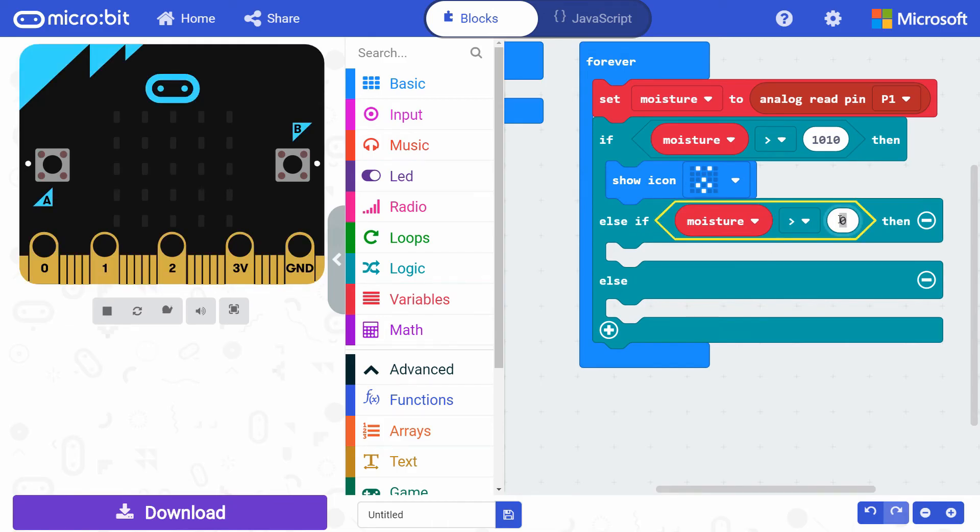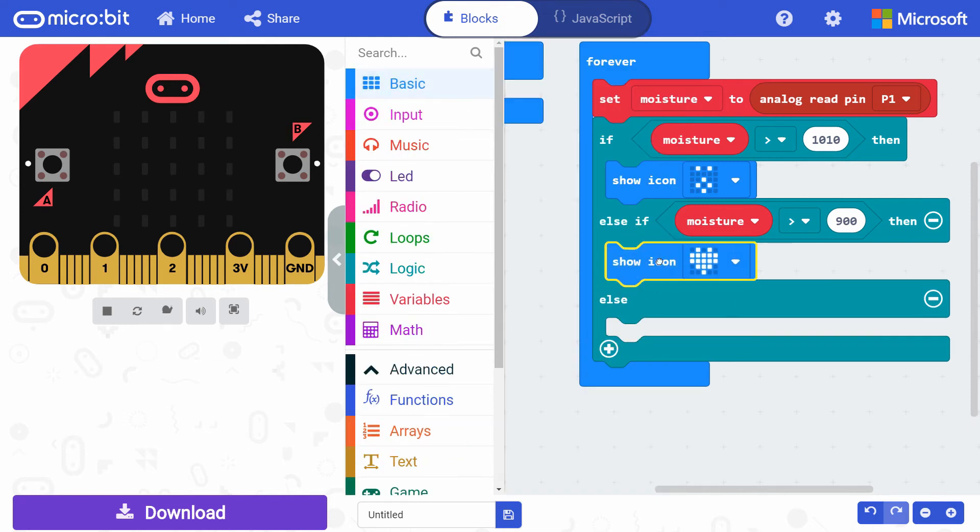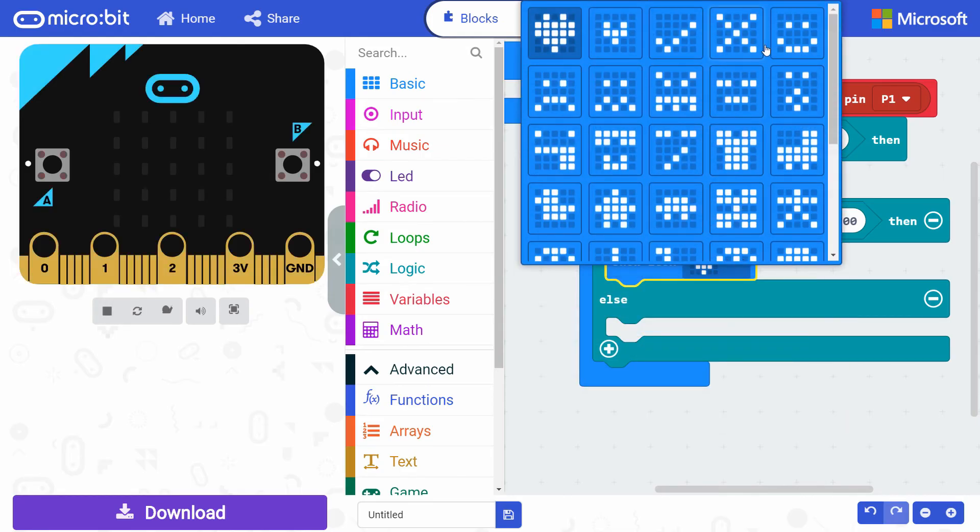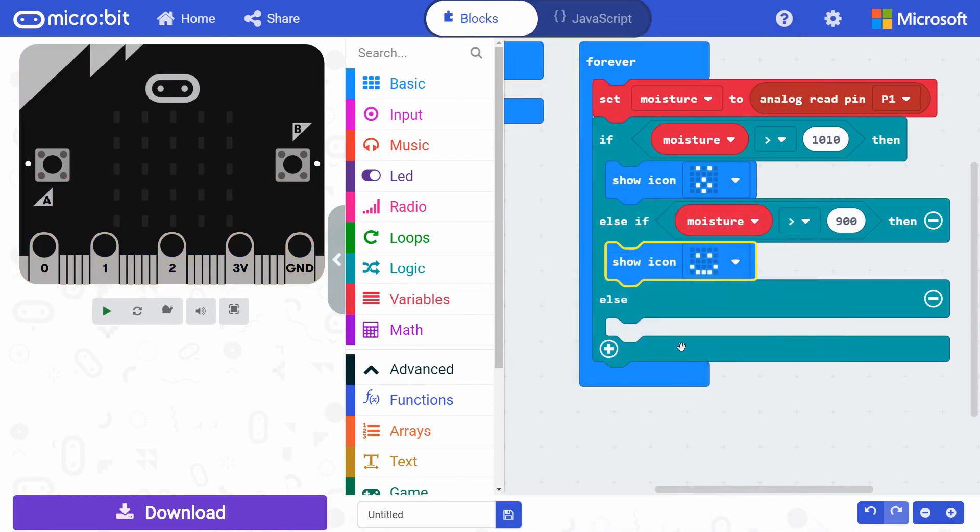Change the comparison value to something near our number showing that the plant had just enough moisture. I'll actually set mine down to 900 as I think the plant can go longer with slightly drier soil. Get another show icon from basic and snap it under this condition. Change the icon to a happy face. This will show that the plant has the right amount of water.